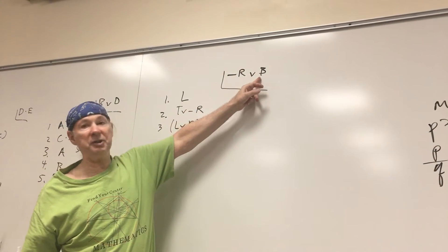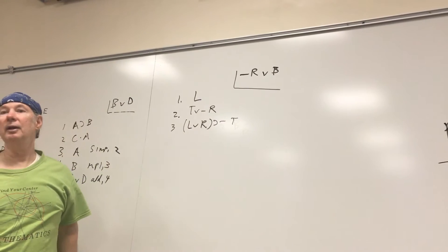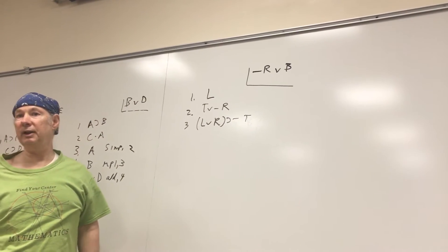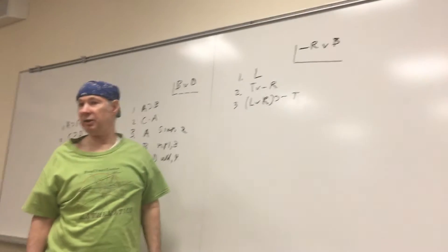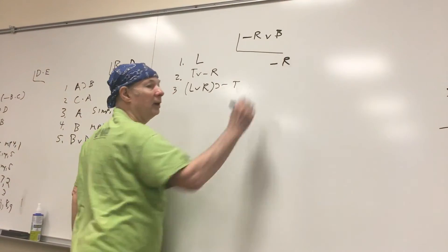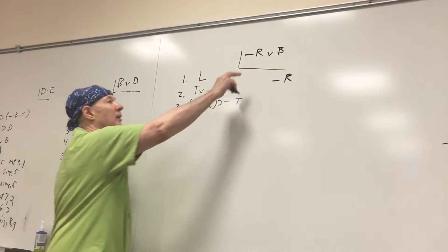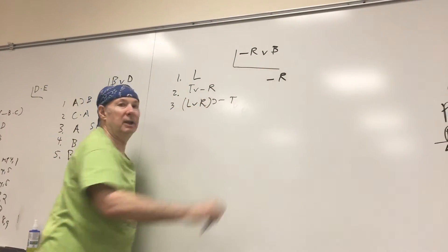But do you see B anywhere in here? So that tells you the only way you can get B is by addition. So what we'll need to do is to get squiggle R and then we can get squiggle R wedge B by addition.